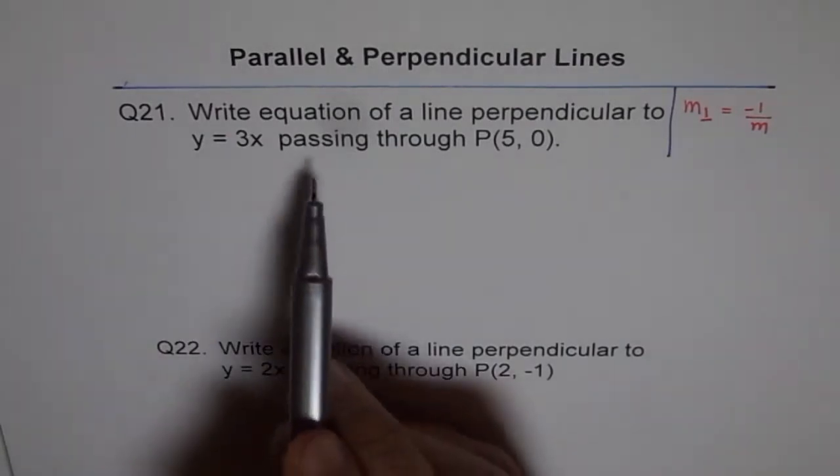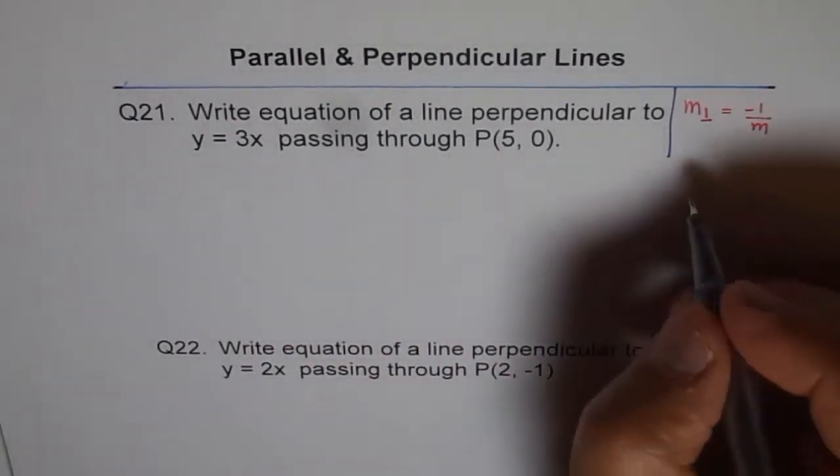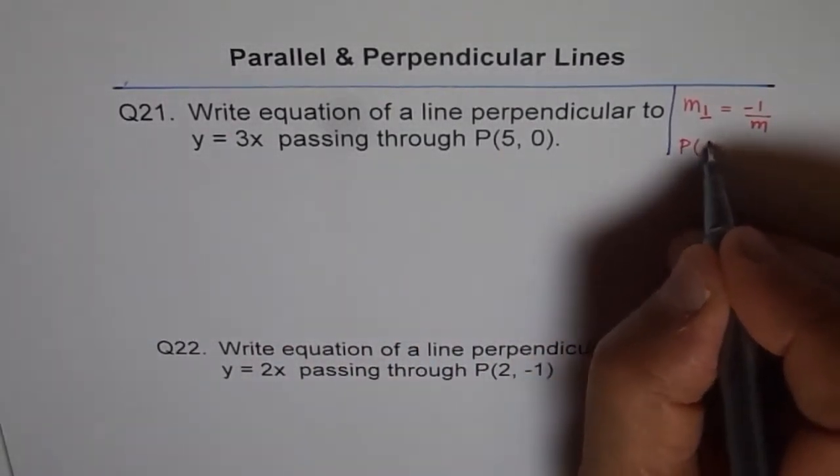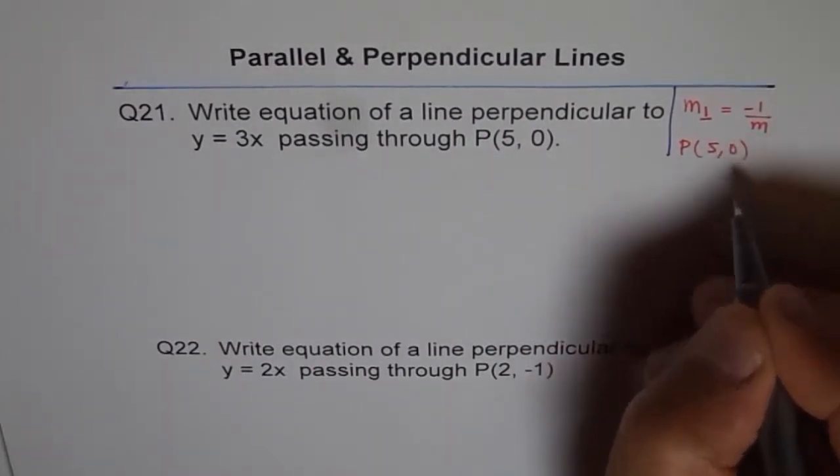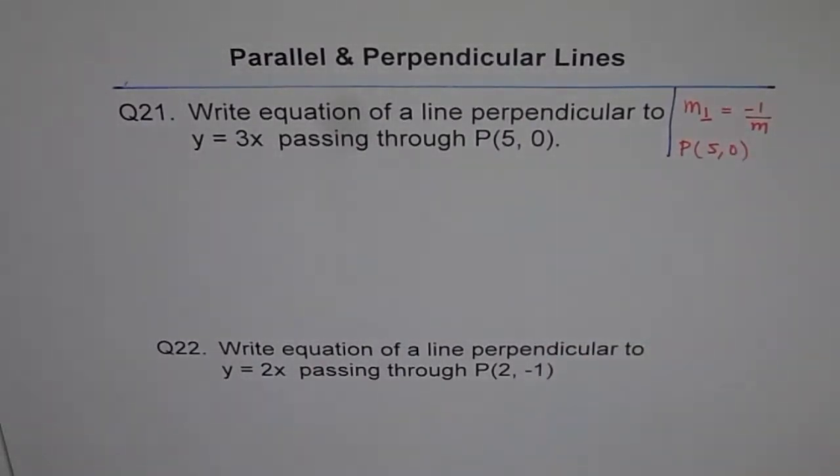Now second thing we know is passing through point P. So the point is given to us and point is 5, 0. So this will help us to find the y-intercept. So let's do it.